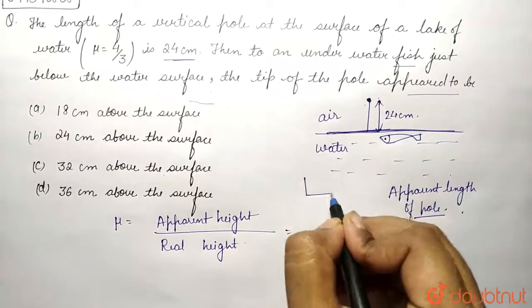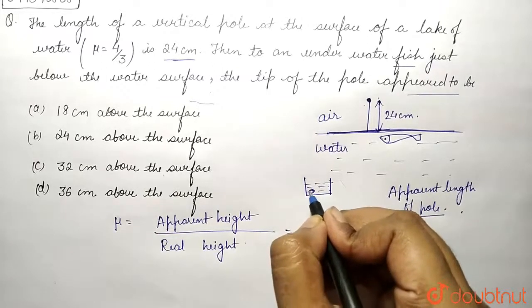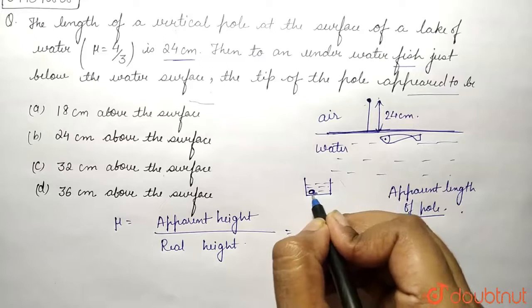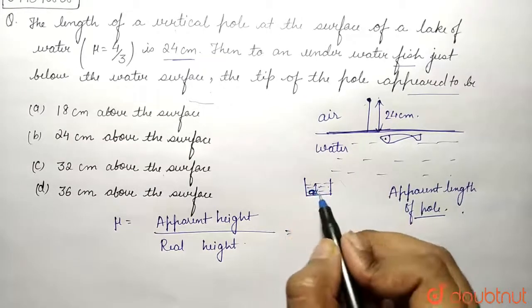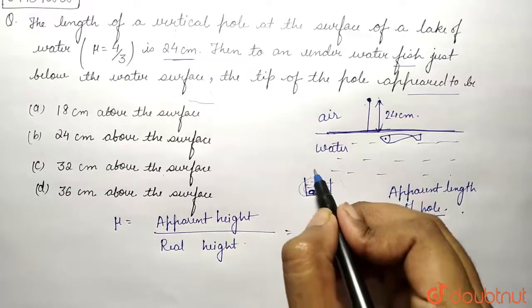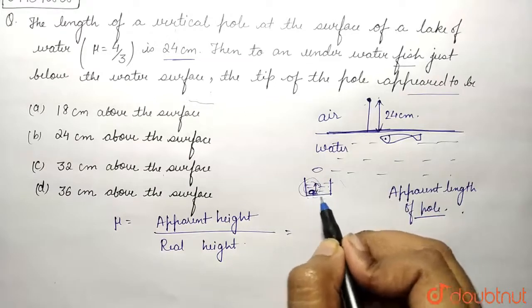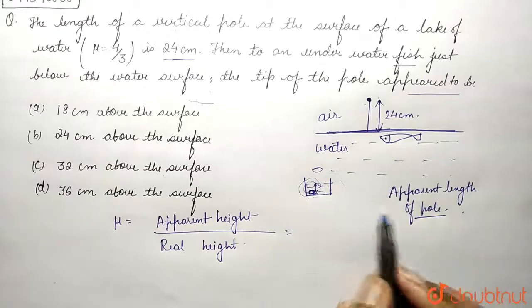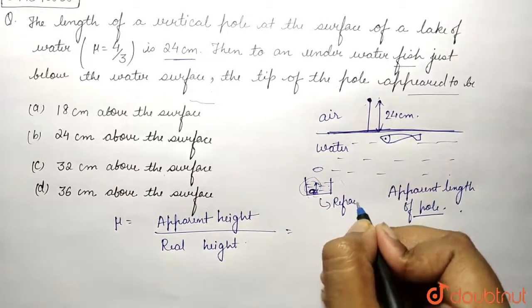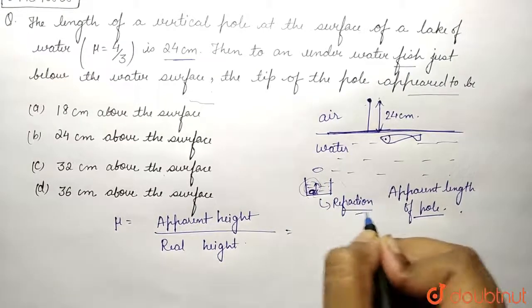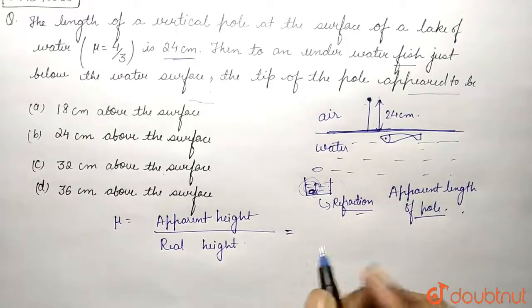experience when we drop a coin in a beaker filled with water. We can see that the coin which is actually present at the bottom of the surface is raised. The distance of this coin visible from the outside is less than the actual distance. Why is this happening? This is happening due to refraction. Similar condition is happening in this case.